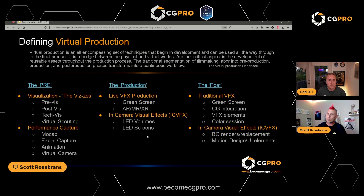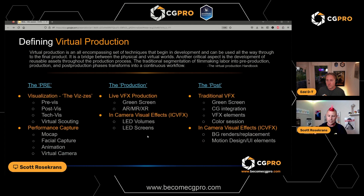I'm a list guy and Ed is a flowchart guy, so you'll see the same information in both forms tonight. Starting with a quote from the Virtual Production Handbook: 'Virtual production is an all-encompassing set of techniques that begin in development and can be used all the way through the final product. It's a bridge between the physical and virtual worlds.' A critical aspect is the development of reusable assets, and the traditional segmentation into pre-production, production, and post-production transforms into a continuous workflow.